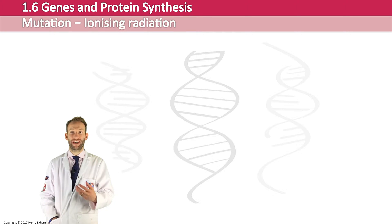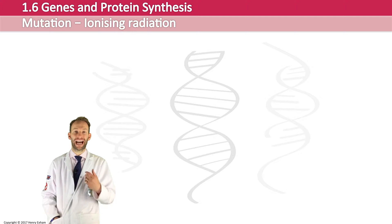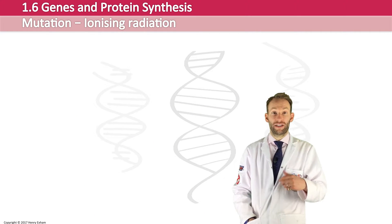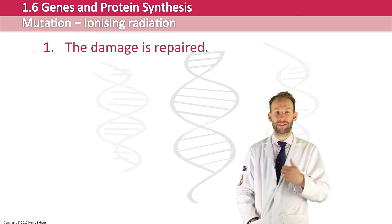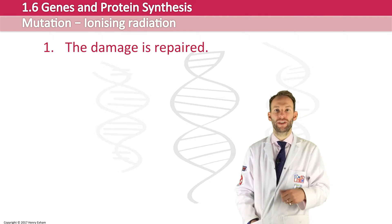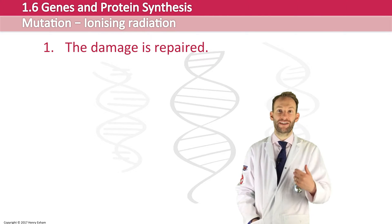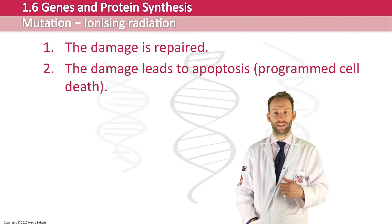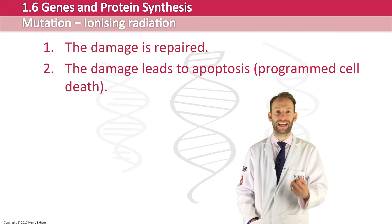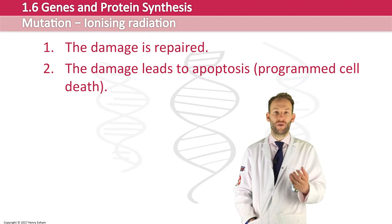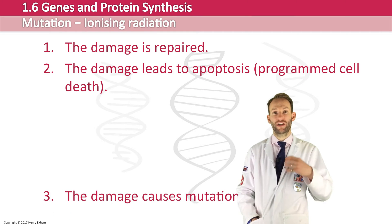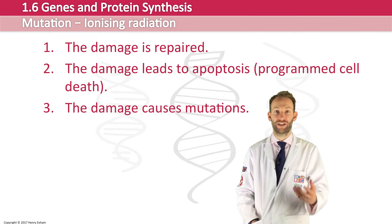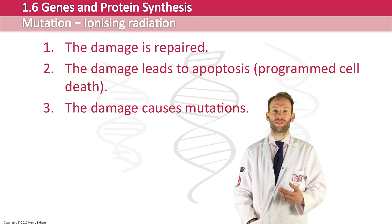When DNA gets damaged by ionizing radiation there are three outcomes. The damage can be repaired — there are a lot of mechanisms in place in our cells to repair damage. The damage could be so serious that it leads to something called apoptosis, which is programmed cell death where the cell self-destructs. Or the damage could cause mutations — it's not repaired and the cell doesn't self-destruct, but it causes permanent changes in the DNA while the cell keeps on living.